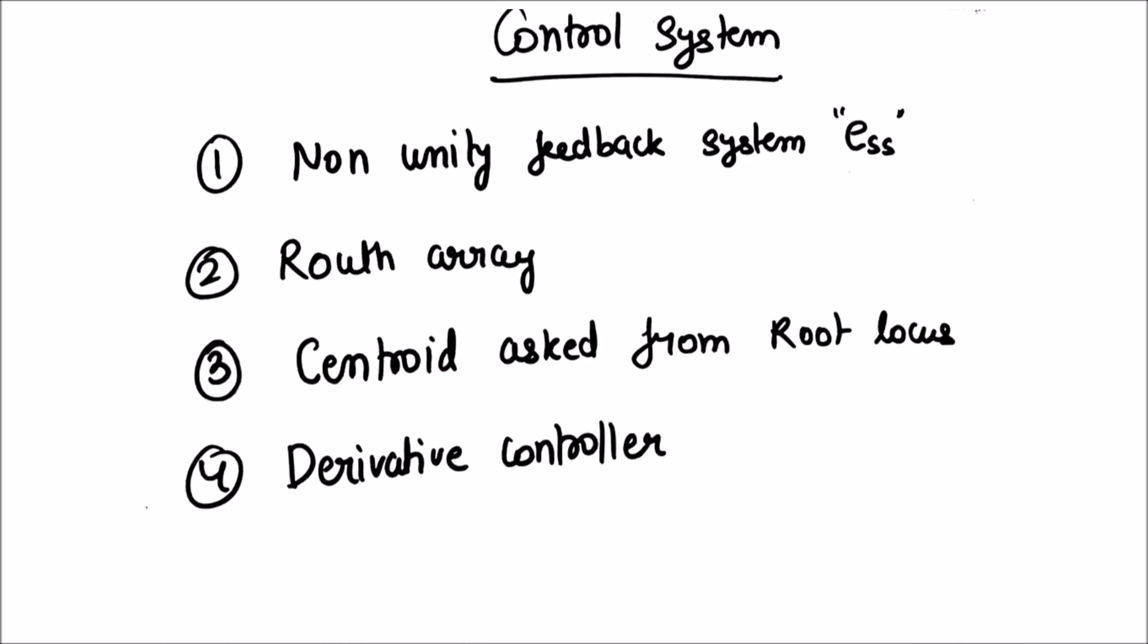Next is control system. One question, a non-unity feedback system was given and they asked for steady state error. One question is from Routh in which some condition from K asked for stability. One question in which everything is given and they asked for the centroid. It is from root locus. One question in which a system was given, then they put some derivative controller in that system and then they asked for damping ratio and this kind of stuff.